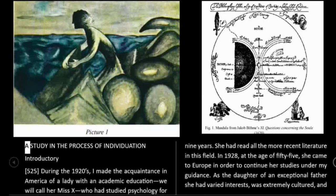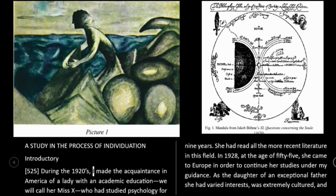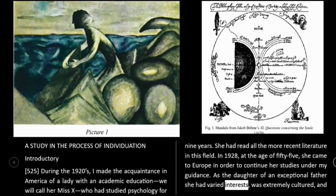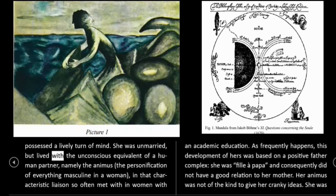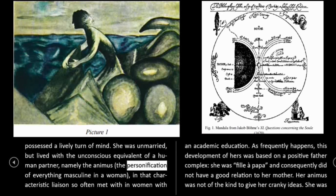A Study in the Process of Individuation — Introductory. 525: During the 1920s, I made the acquaintance in America of a lady with an academic education — we will call her Miss X — who had studied psychology for nine years. She had read all the more recent literature in this field. In 1928, at the age of 55, she came to Europe in order to continue her studies under my guidance. As the daughter of an exceptional father, she had varied interests, was extremely cultured, and possessed a lively turn of mind. She was unmarried, but lived with the unconscious equivalent of a human partner, namely, the animus — the personification of everything masculine in a woman — in that characteristic liaison so often met with in women with an academic education.